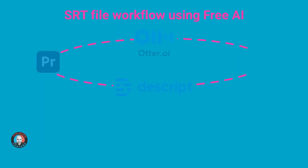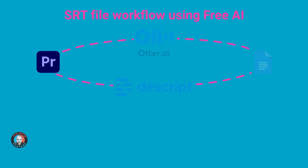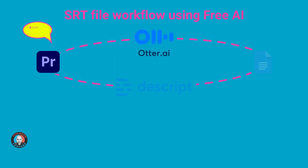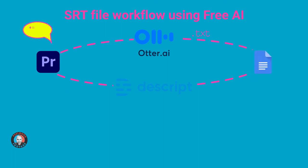Last week I put out a clip talking about how you could slash the amount of time and effort you spend creating subtitles for your videos. The workflow I described involved exporting an audio clip from your final video sequence, bringing that into otter.ai, which is going to process that and use automated speech-to-text to create a transcript.